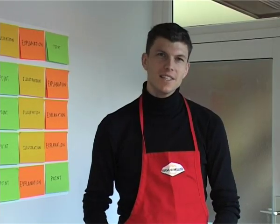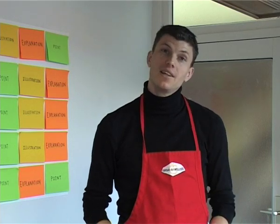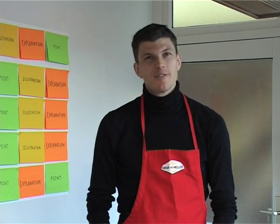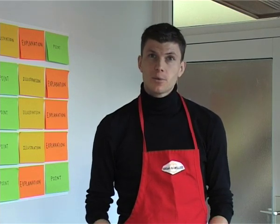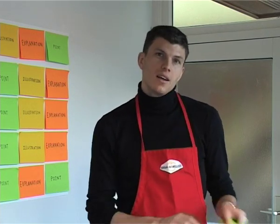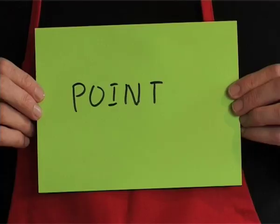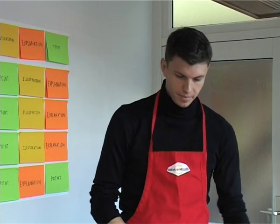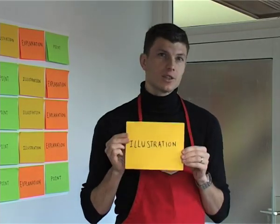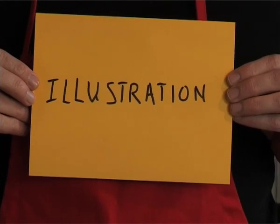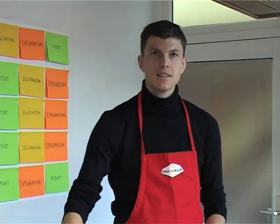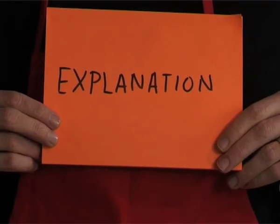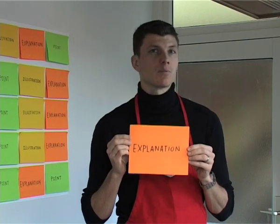For a well-balanced meal, you need three types of foods: meats, potatoes, and vegetables. For this essay, too, we also need three types of sentences. You need your points — you need to make clear, bold statements. You need illustrations or quotes to back up your arguments. And you need to explain to the reader what you mean, including some analysis and explanation.